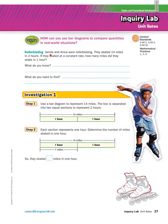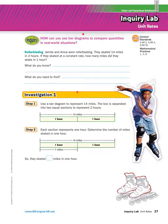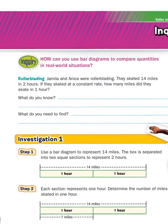First off, this says Jamila and Anika were rollerblading. They skated 14 miles in two hours. If they skated at a constant rate, how many miles did they skate in one hour? So, let's go through and find out what we know. Instead of writing it down, we're going to do some circling and underlining. I like to circle what I know, and then I squiggly underline what I need to find out.